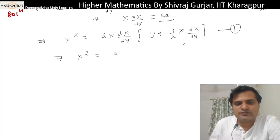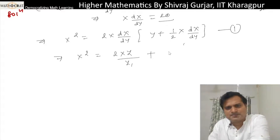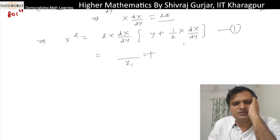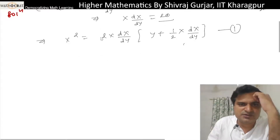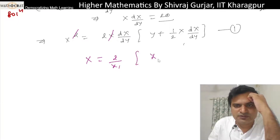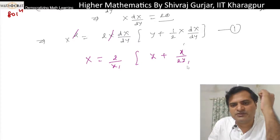Equals 2xy dy/dx divided accordingly. So x equals 2 divided by y₁ and y plus x divided by 2y₁.